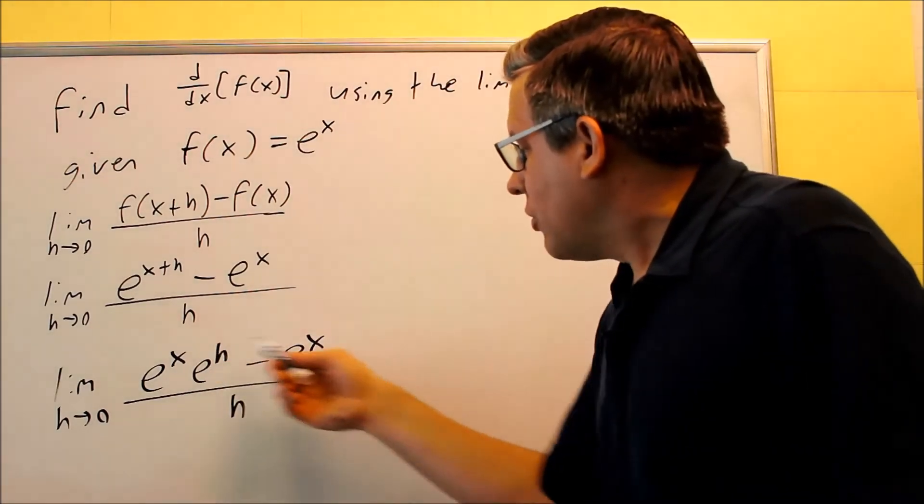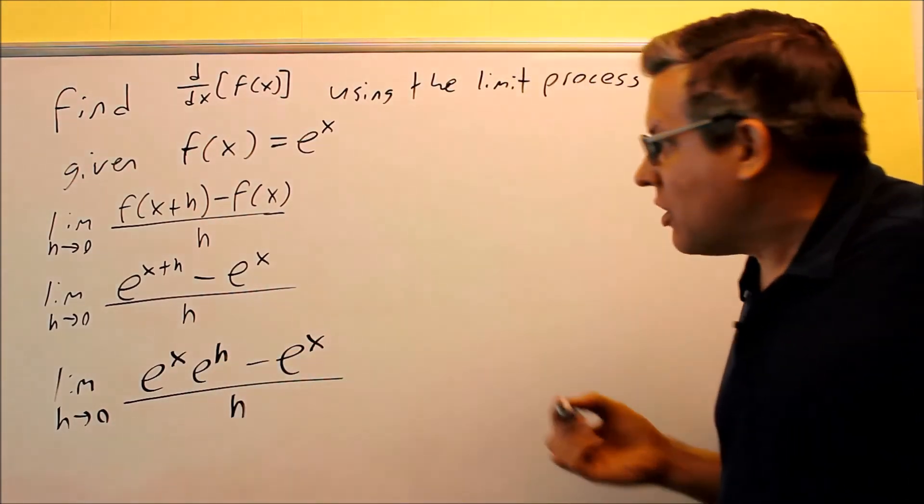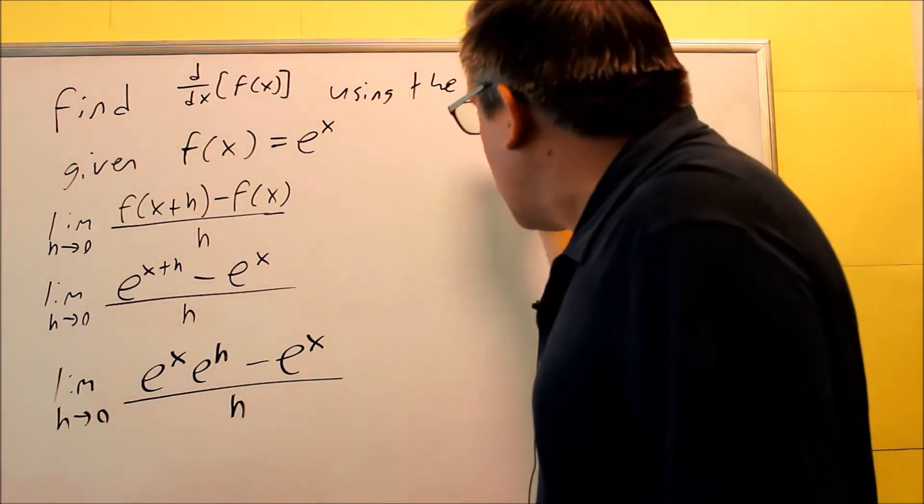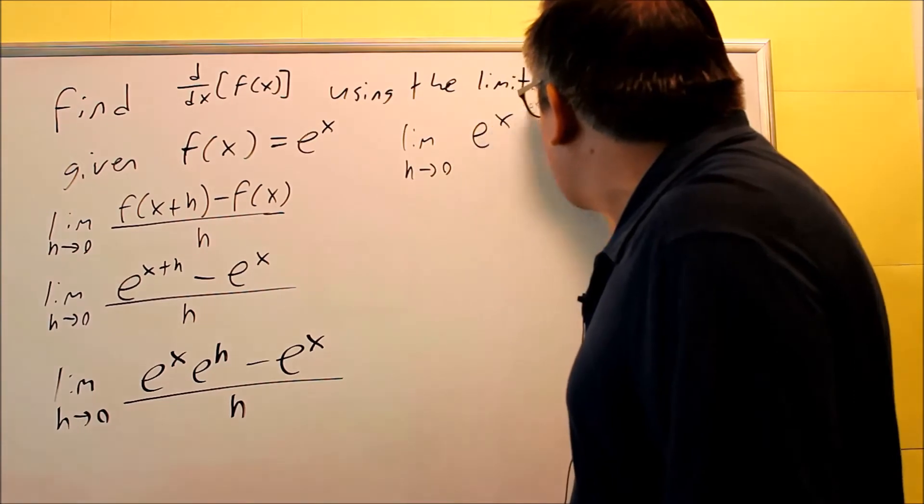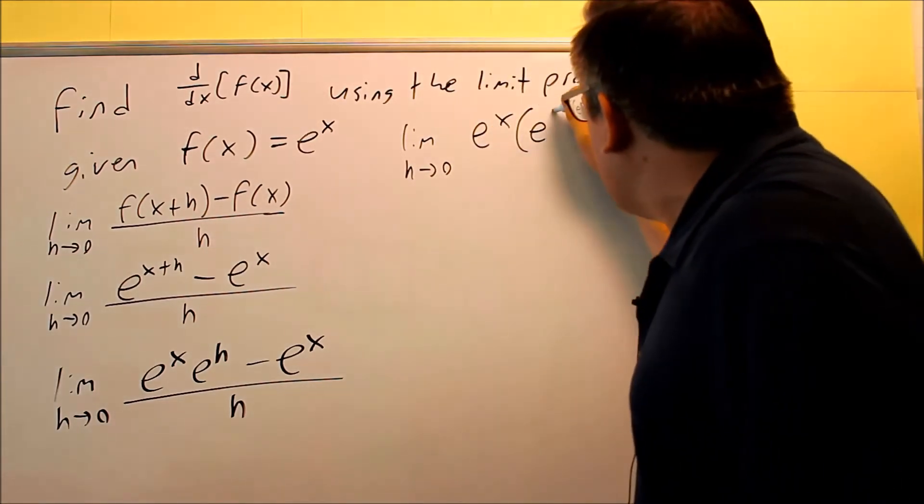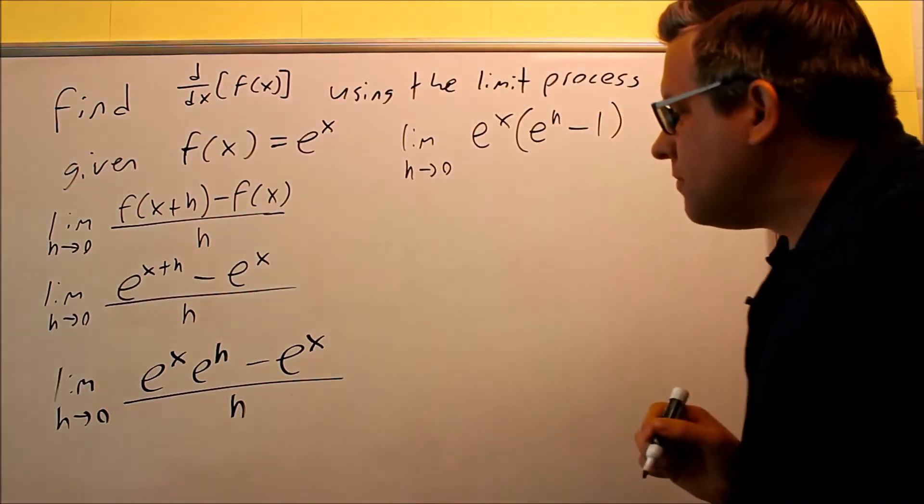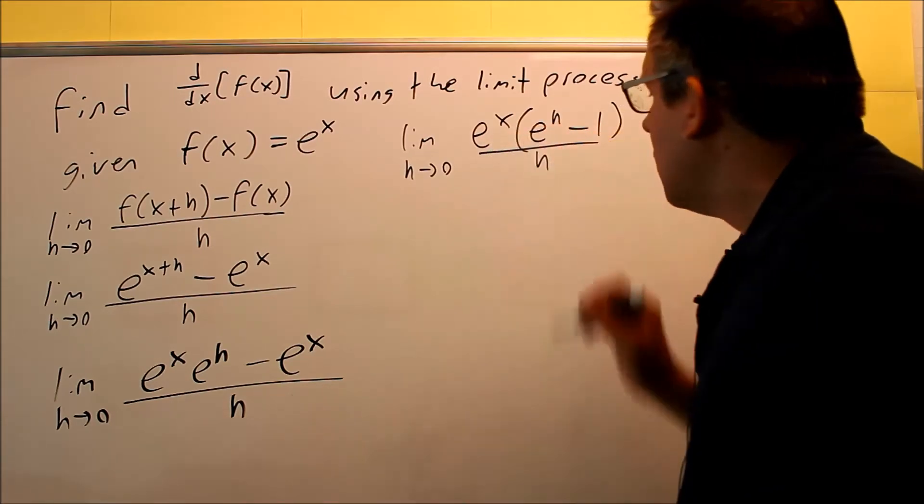I notice that I have a common factor now, e to the x, that I'm going to pull out. So what I'll do next is factor that out on top. So I have e to the x and then I have e to the h minus 1, all that's going to be over h.